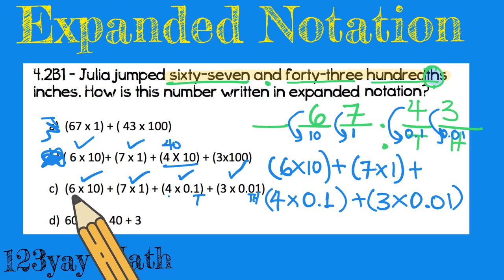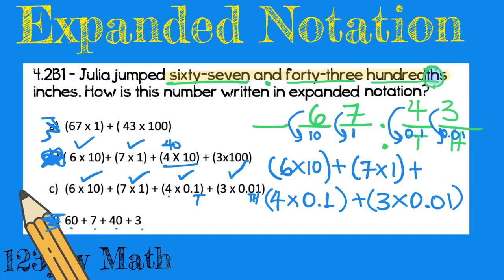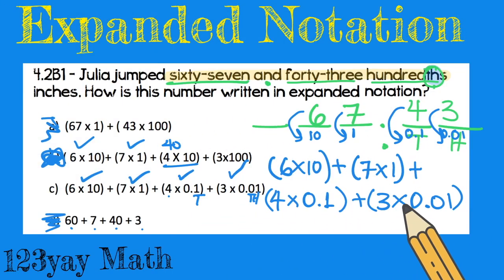But just in case, we need to check option D, just to make sure that we didn't fall for a trick or something like that. 60 plus 7 plus 40 plus 3. Do you think this is the answer? Absolutely not. This doesn't even have decimals. So now I know, with all of my heart, singing heart, that C is the correct answer.